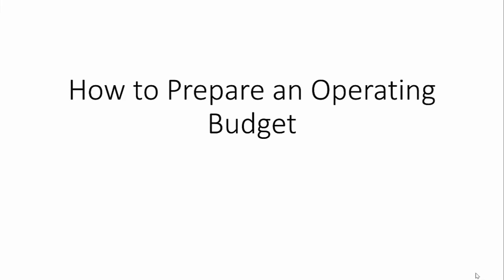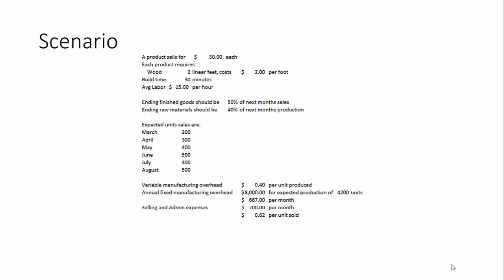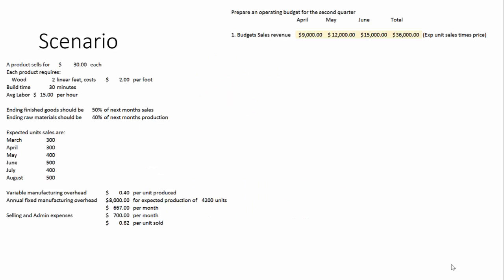Welcome to this video about how to prepare an operating budget. There are several different parts and pieces, so we will go through each one step at a time. The problem has a scenario with various pieces of information: sell price, raw material products, how long it takes to build a product, average labor price per hour, guidelines for ending finished goods and raw materials inventories, expected sales units for each month, and variable and fixed manufacturing overhead, as well as selling and admin expenses.